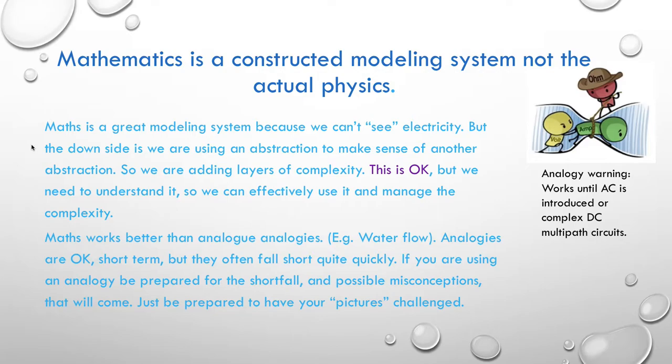So mathematics is a constructed modelling system, not the actual physics. Maths is a great modelling system because we can't see the electricity. But the downside is we're using an abstraction to make sense of another abstraction. So we're adding layers of complexity. This is OK, but we need to understand it so we can effectively use it and manage that complexity. Maths works better than analogue analogies. Analogies are OK for the short term, but they often fall short very quickly. If you're using an analogy, be prepared for a shortfall and possible, if not likely, misconceptions. And they will come. Just be prepared to have your mental models challenged. Always be open to have your way of understanding it challenged.